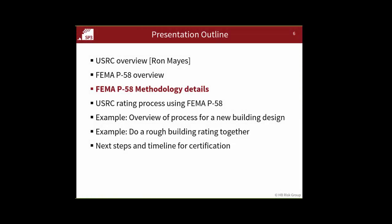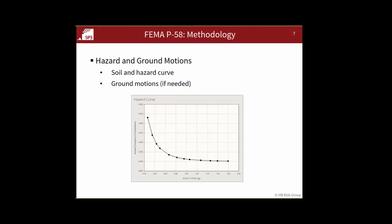That's the overview. Now I want to go through the steps in the process and dig into the details a bit more. For Step 1, hazard and ground motions, we need soil and hazard curve — whether that's site-specific information or from USGS databases. I assume we could use USGS databases in most cases. If you're going to do response history analysis, you'll need ground motions; the simplified method can be used as a substitute for that.